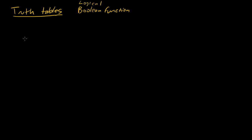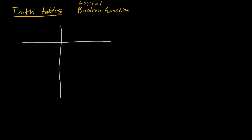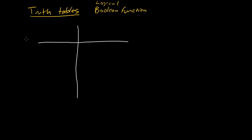Truth tables are tables. We start out with some lines. In a truth table, we have essentially four quadrants. On the left-hand side we have our inputs. Then we have a line over here, and that's important — it's important to add a line to separate our inputs from our outputs.